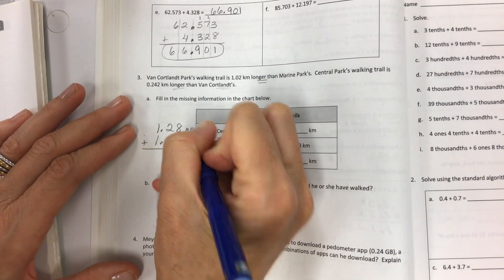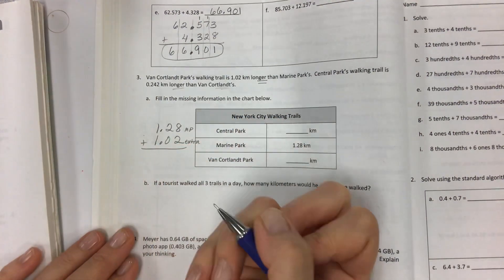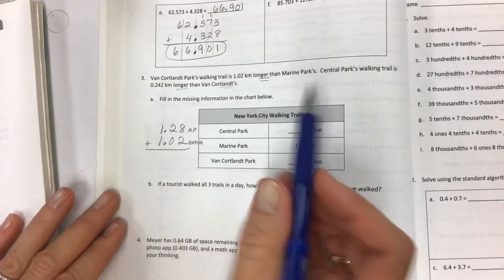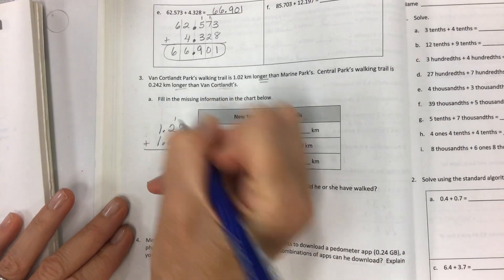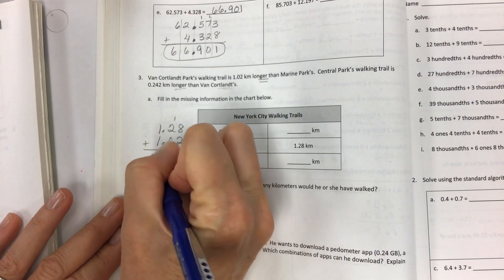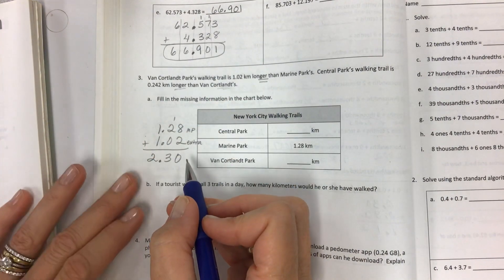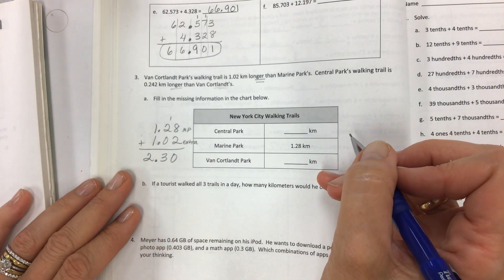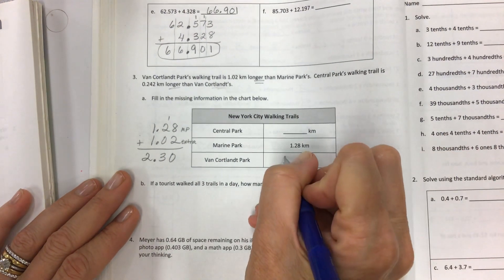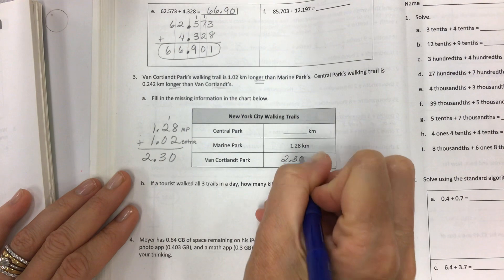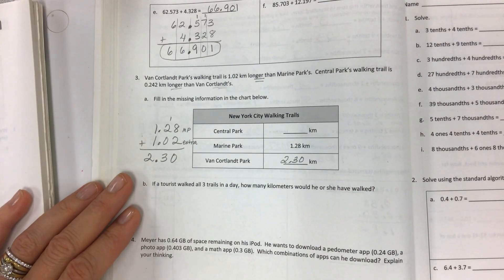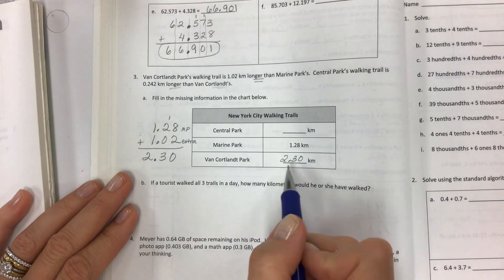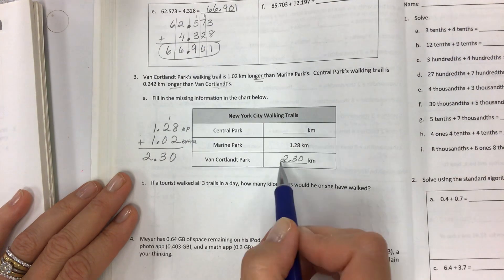Take your 1.28, that is Marine Park, and add 1.02, that is the extra. The strategy is you really have to read the problems carefully and then show all your work. The total distance of Van Cortlandt is 2.30 kilometers. 2.30, 2.3, it's all equivalent.